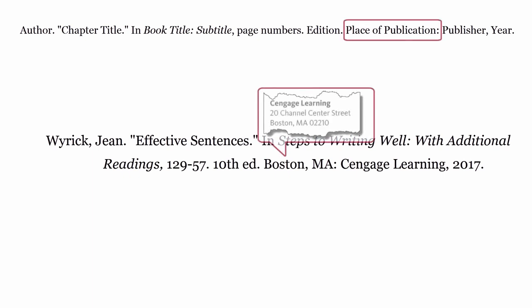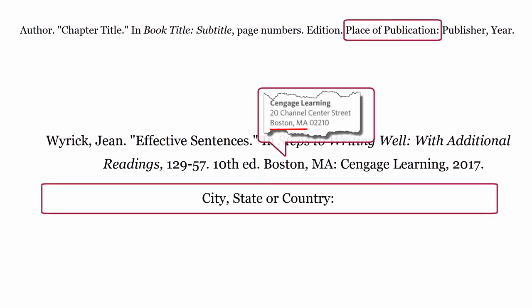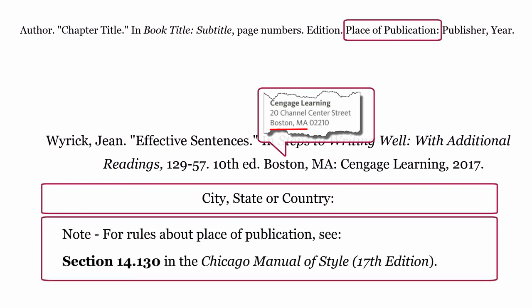Place of publication. This is where the publisher is based. The place of publication is formatted using the city, then a comma, then the state or country, then a colon. For rules about the place of publication, see section 14.130 in the Chicago Manual of Style, 17th edition.